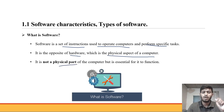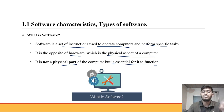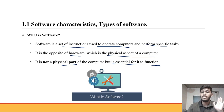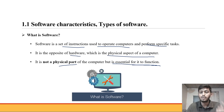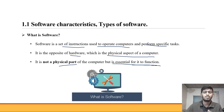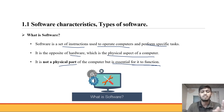Software is not a physical part of a computer, but it is essential for its function. A computer consists of both hardware and software. Software is a set of instructions that perform a specific task in a computer. Software cannot be touched; hardware can be touched.